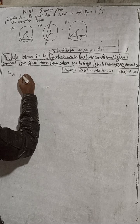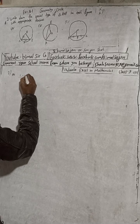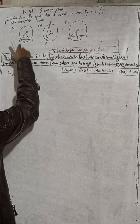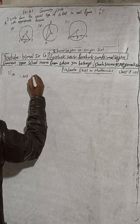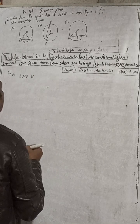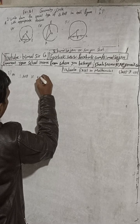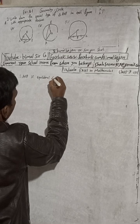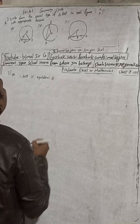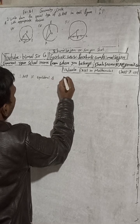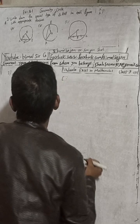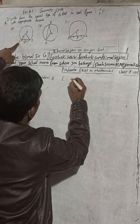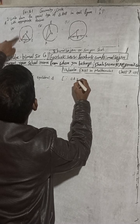Triangle AOB is an equilateral triangle, with reason. Because OA is equal to OB, and OA is equal to AB.